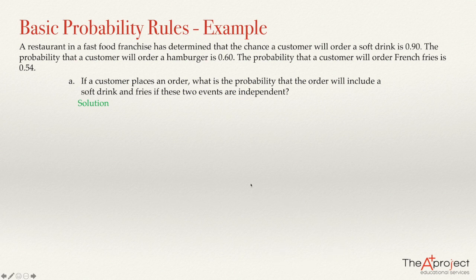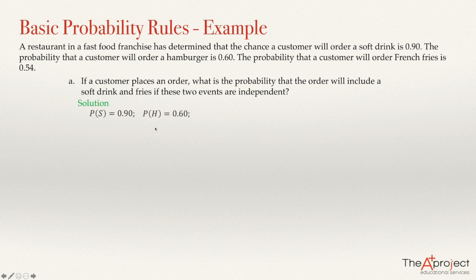We know that the probability that the customer orders a soft drink is 0.90, calling this event S. The probability that the customer orders a hamburger is 0.60. And finally, the probability that the customer will order french fries is 0.54.